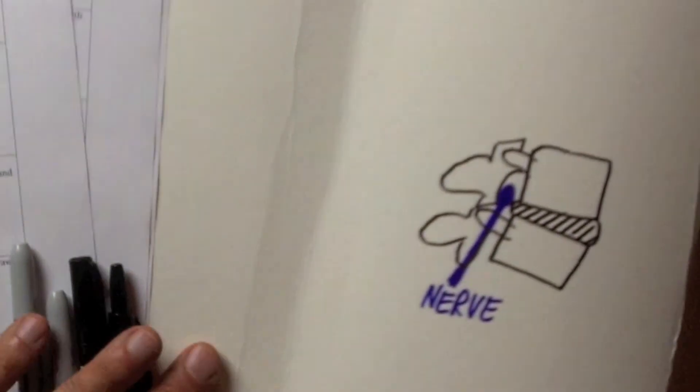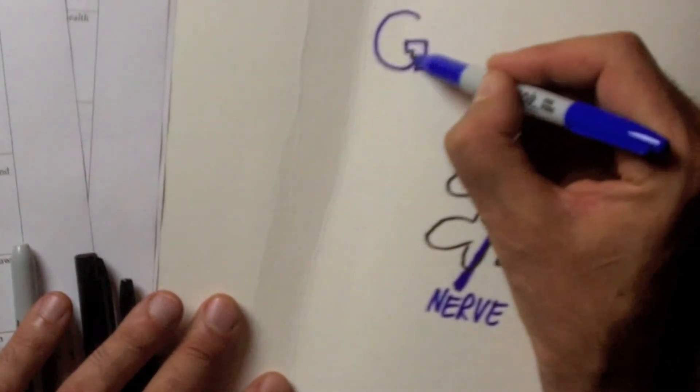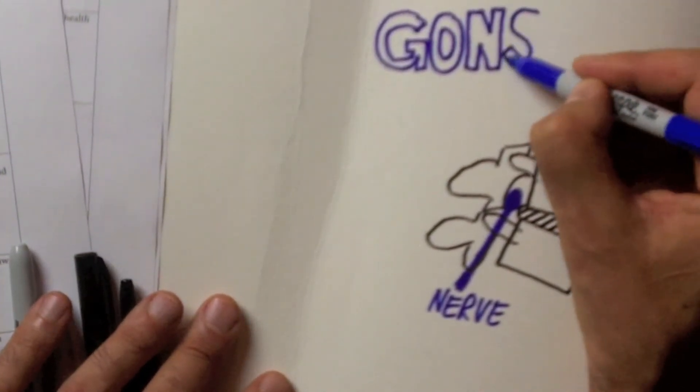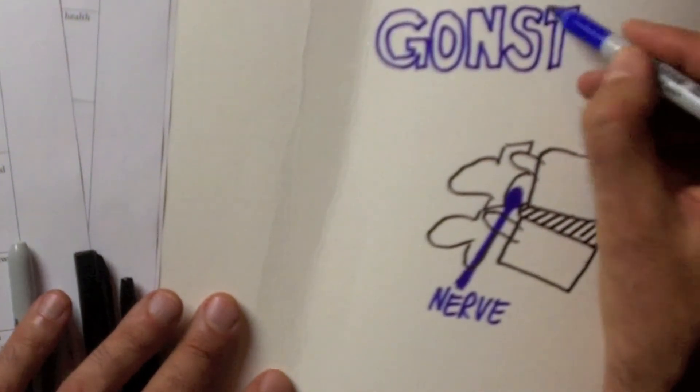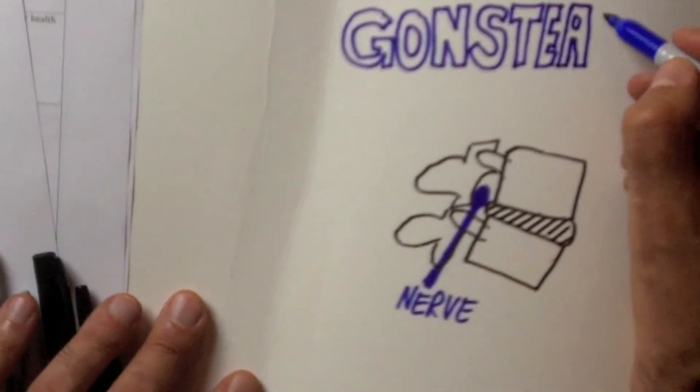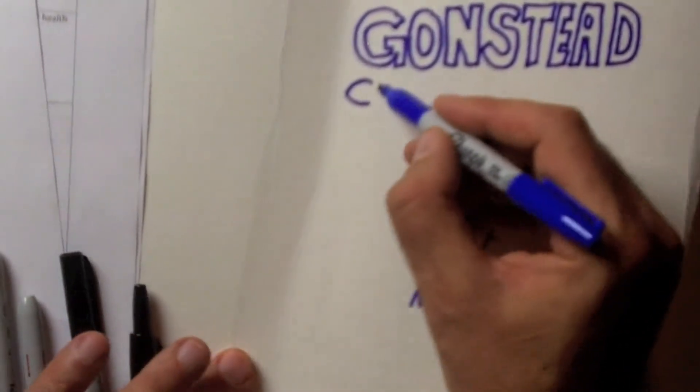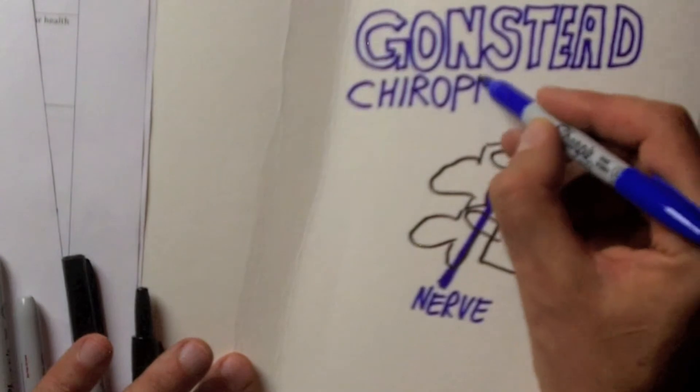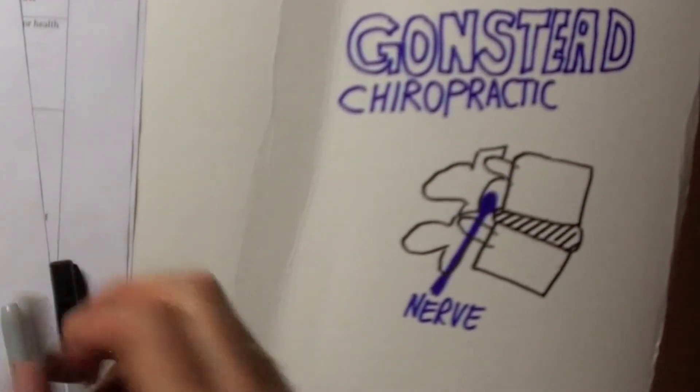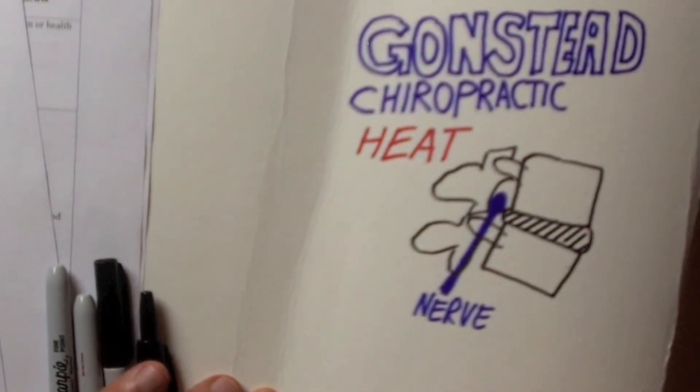In order to find subluxations or any kind of those misalignments in your spine, we look for the cardinal signs of inflammation. Is there any heat? We use a handheld instrument that compares the temperature on one side to the other. Or is there any swelling? And do the joints move properly? We use static and motion palpation to look for the function of the joint. Then we also look at the joints and the posture in general. If necessary, we even take x-rays to see if it's safe to adjust and how to adjust it.